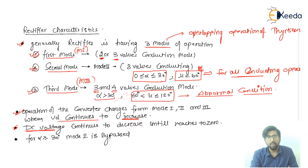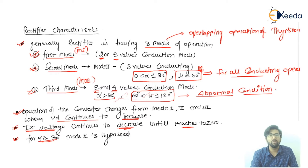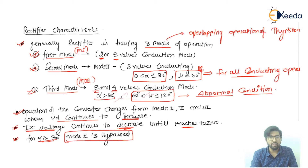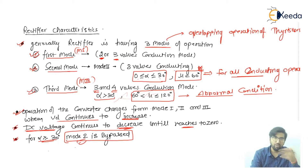The DC voltage Vd continues to decrease until it reaches zero. If alpha is greater than 30°, mode 2 is bypassed — for mode 2, alpha must be less than 30° and mu must equal 60°. When alpha is greater than or equal to 30°, we go directly to mode 3 where three and four valves are conducting.